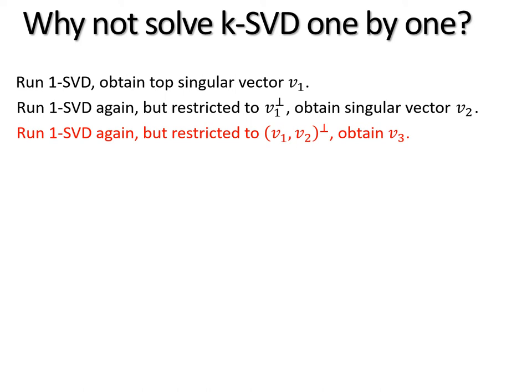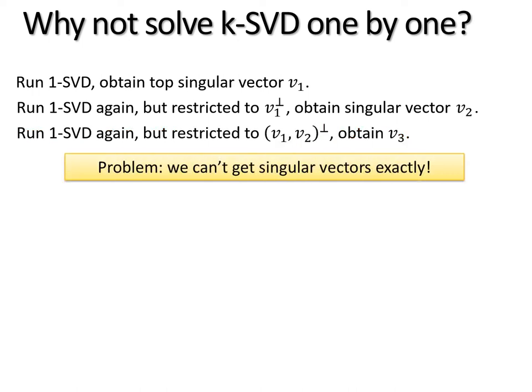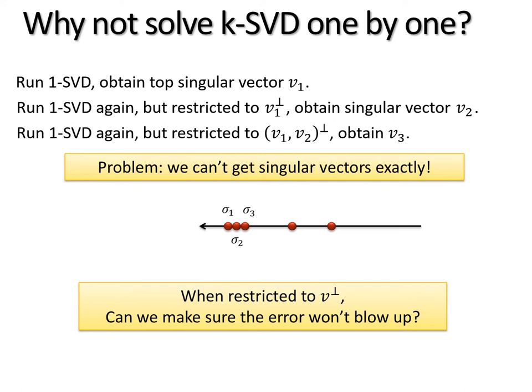The issue with this approach is that we cannot compute singular vectors exactly. For instance, if the top three singular values are very close to each other, then unless you have a really exact algorithm, you can't really distinguish the first three singular vectors, and therefore maybe what you output as the 1SVD algorithm is only something that lies in the span of the top three singular vectors. In such a case, if we restrict to this vector v that has error in it, then can we make sure that the error doesn't blow up?